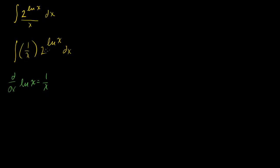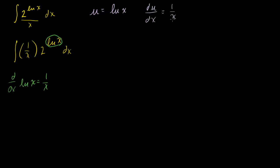Sometimes you can do it in your head, but this problem is still not trivial to do in your head, so let's make the substitution. Let's substitute the natural log of x with u. If you define u — it doesn't have to be u, that's just the convention, it's called u-substitution — let's say u is equal to the natural log of x, and then du/dx, the derivative of u with respect to x, is equal to 1 over x. Or just the differential du, if we multiply both sides by dx, is equal to 1 over x dx.